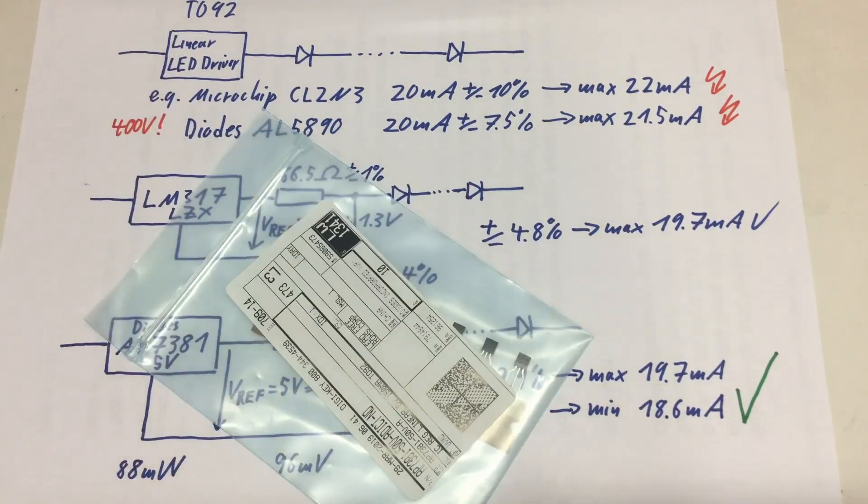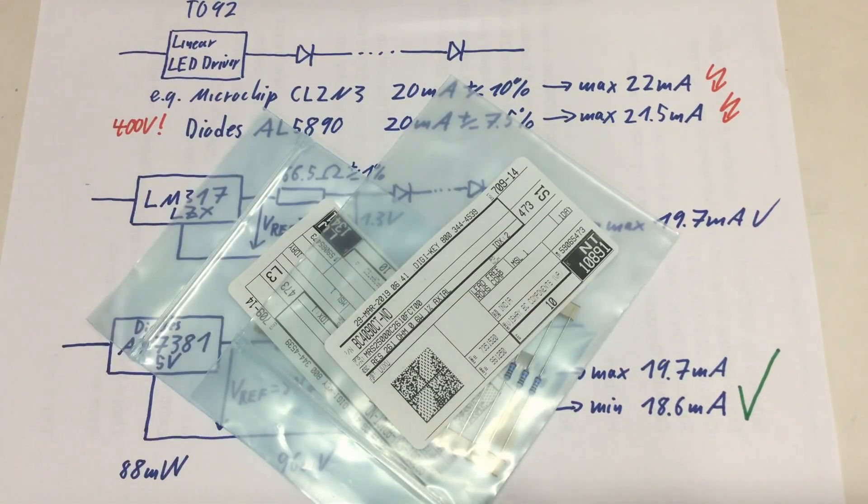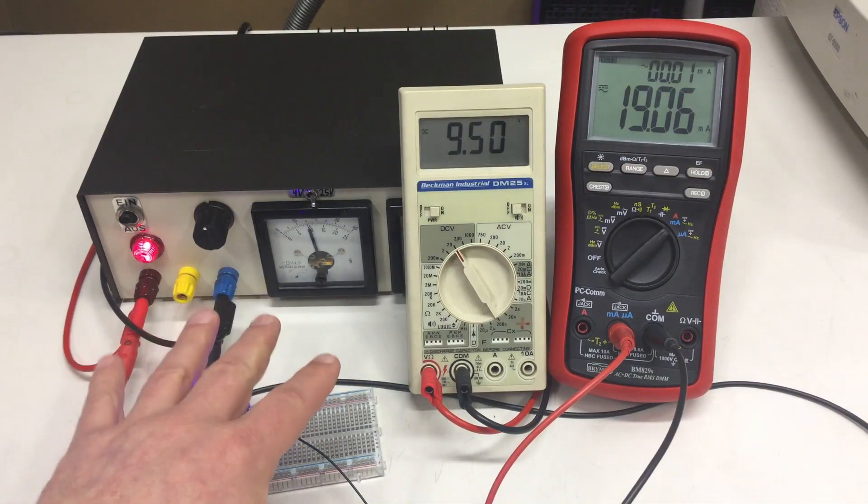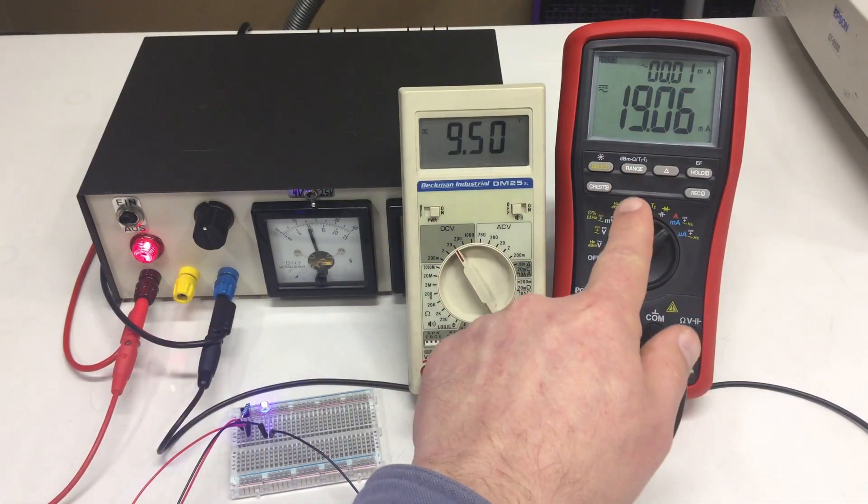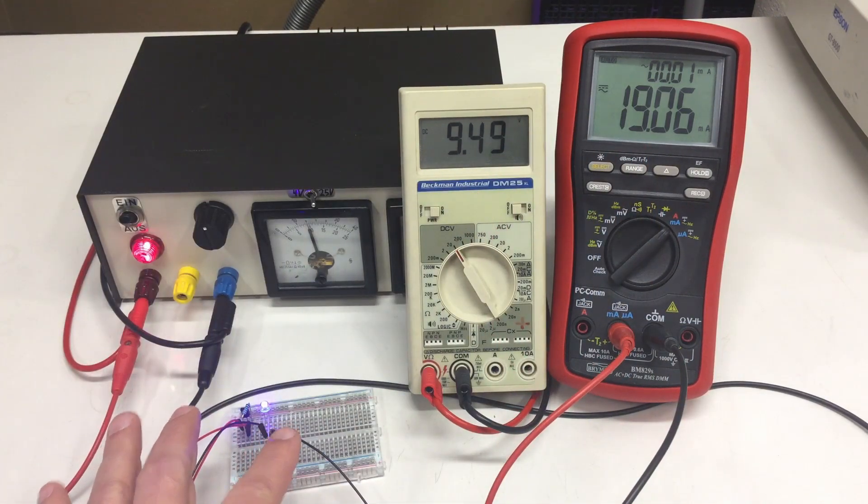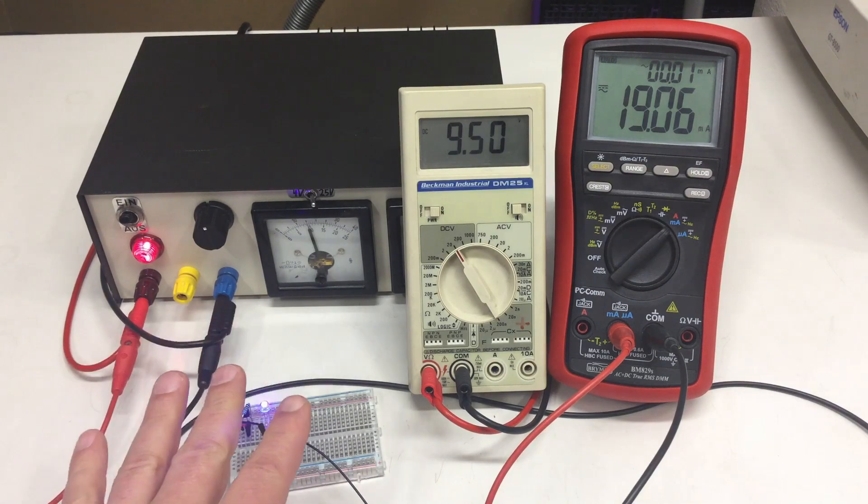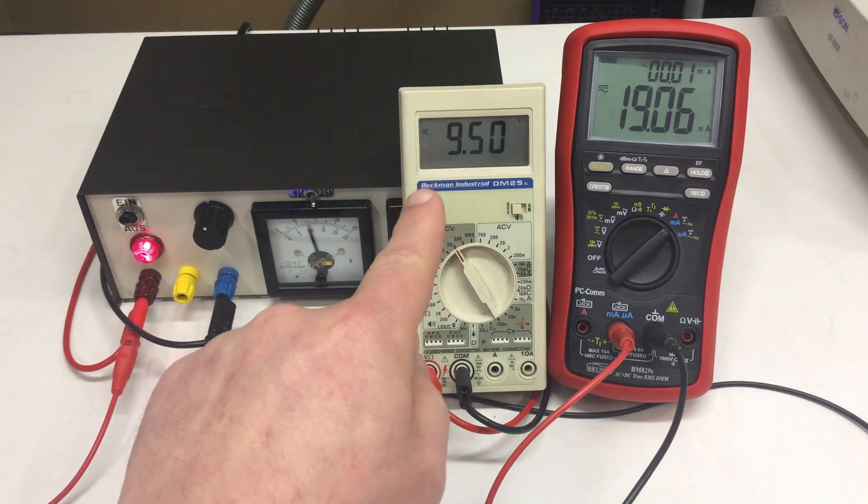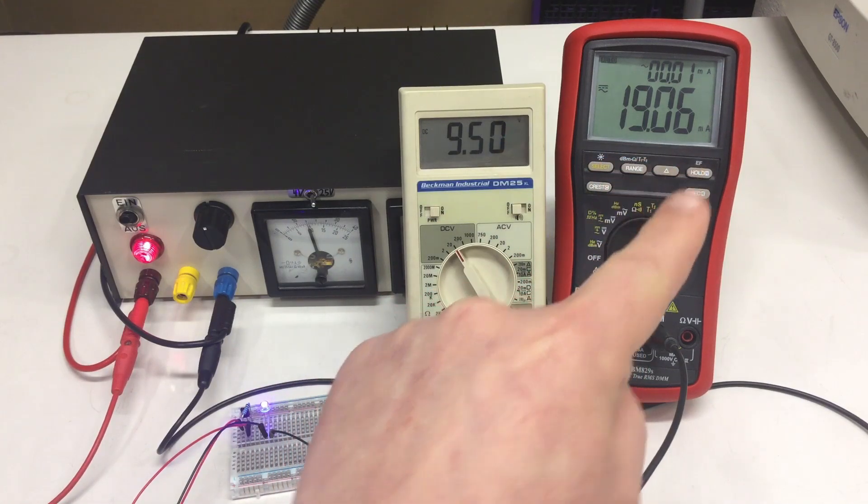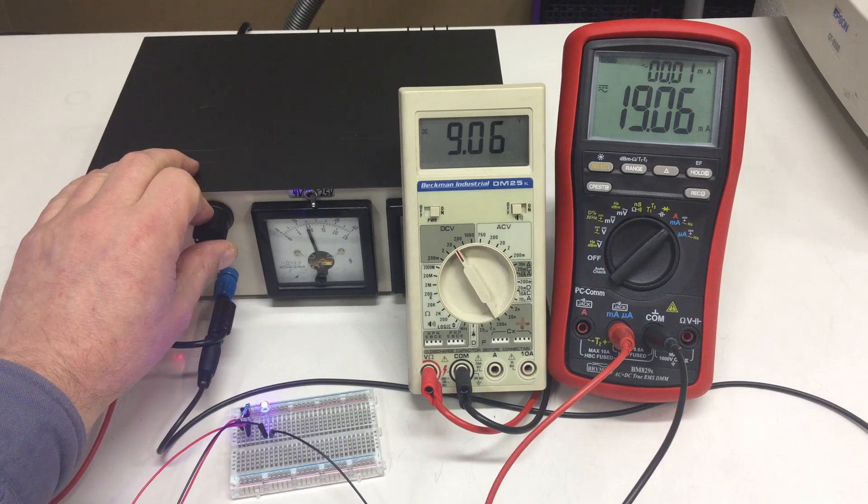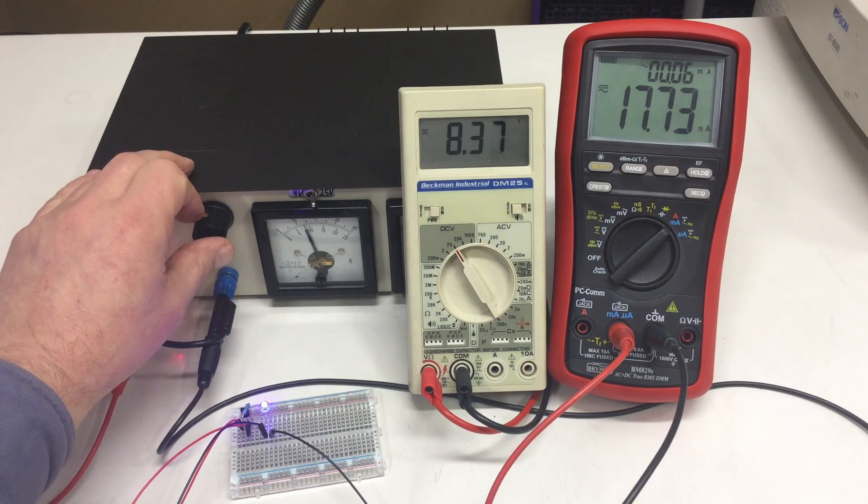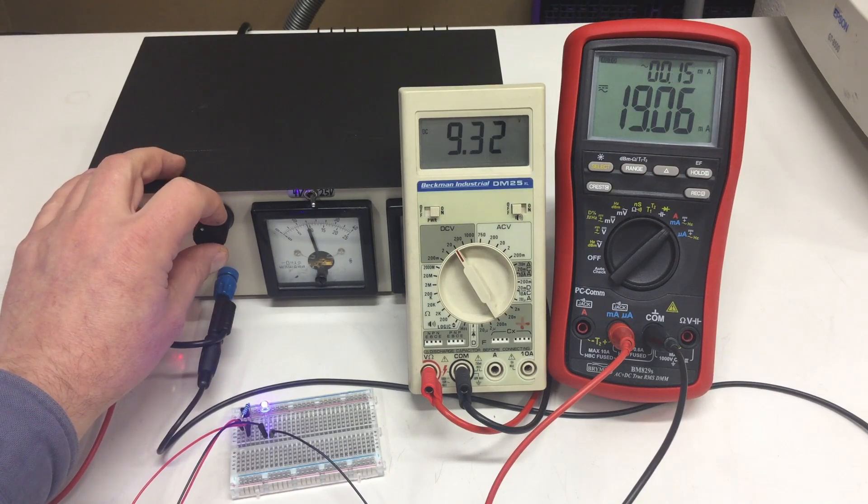I've built everything up on that breadboard here. This is my current and this is my voltage across the whole circuit. I added one LED and you can see at 9.5 volts we are at 19.06 milliamps. And below that, my current drops, which is okay.